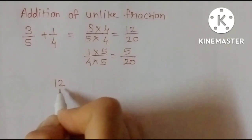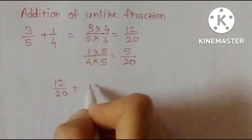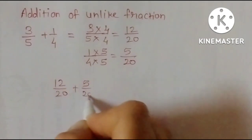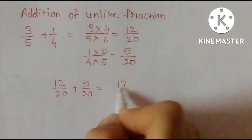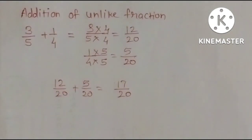12 upon 20 plus 5 upon 20. 12 plus 5 equals 17 upon 20.